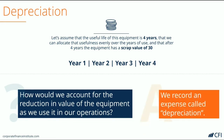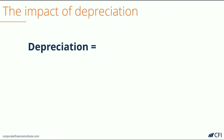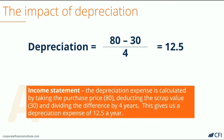The answer is that we would record an expense called Depreciation, which would spread out the cost of this equipment over its useful life. On the Income Statement, we record a Depreciation Expense. We calculate that expense by taking the purchase price of the equipment, subtracting the scrap value at the end of its life, and dividing it by the number of useful years. When we make that calculation, the result is a Depreciation Expense of 12.5 per year for 4 years. This is what will be recorded on the Income Statement for each of the 4 years that the asset is depreciated.